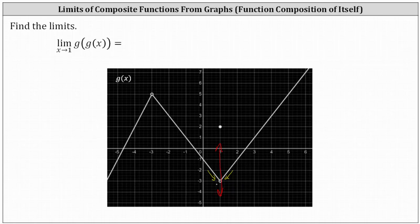And because the outer function is also g of x and g of x has a discontinuity at x equals negative three, it's important to recognize we're approaching the function value of negative three from above, or from values greater than negative three. This indicates the given limit is equal to the limit as x approaches negative three from the positive side or right side of the outer function g of x.